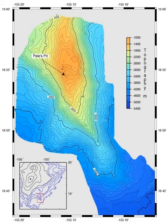Simply put, the bathymetric chart is intended to show the land if overlying waters were removed in exactly the same manner as the topographic map.